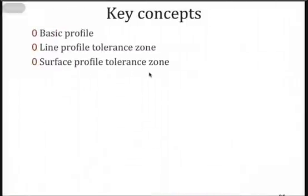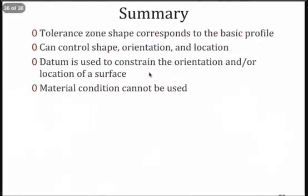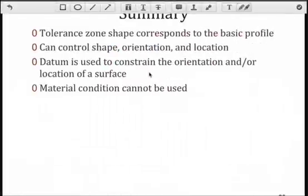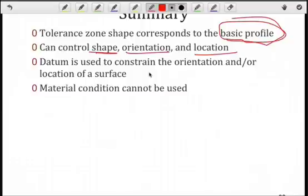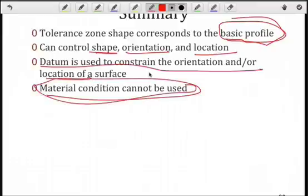You should understand the concept of a basic profile, or the true profile, which would be theoretical. And then the 2D line profile tolerance zone, how that's different than the 3D surface profile. The shape of the tolerance zone always goes back to the basic profile. So, it's completely dependent on that. We can control shape, orientation, and location, depending on whether or not we use datums and basic dimensions. Datums are used to constrain orientation and location. And don't forget, material condition cannot be used, so you shouldn't see an M or an L in the feature control frame.